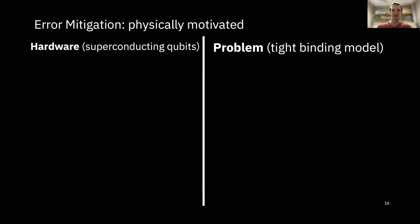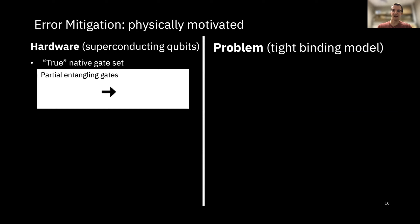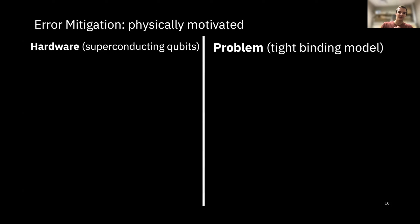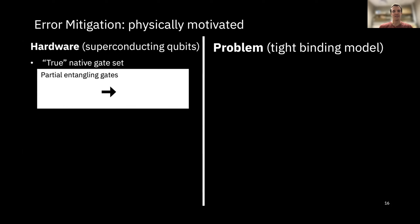I'm getting short on time, so I'm going to highlight one error mitigation strategy that I think is maybe the most important. In terms of error mitigation, it's good to think about the specific hardware you're using — superconducting qubits, trapped ions, photons, NV centers. Then think about the problem you're trying to simulate. I'm going to highlight just one error mitigation technique and move on: the true native gate set.